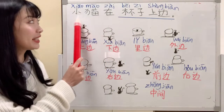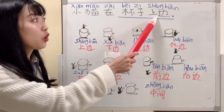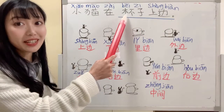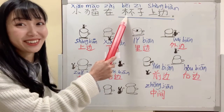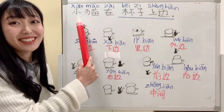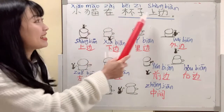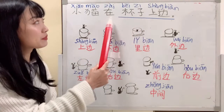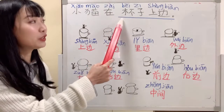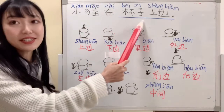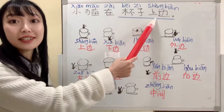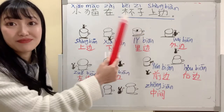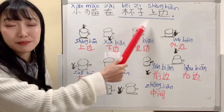The cat is on the cup. So 在 is before the location. On the cup is the location. Cat is on the cup.